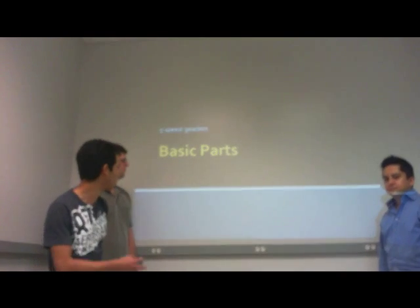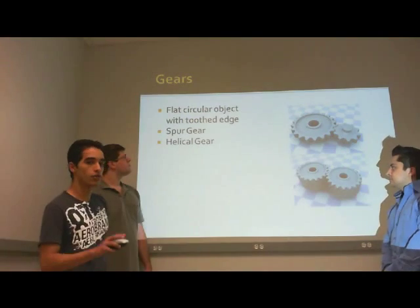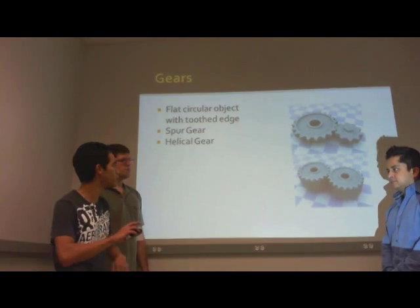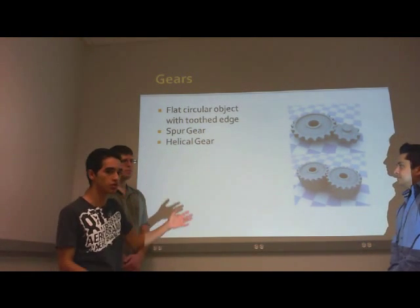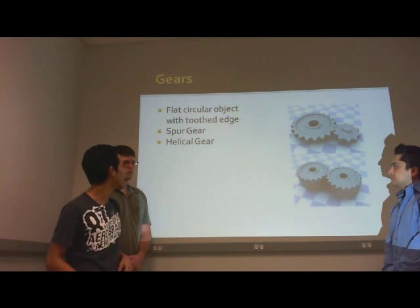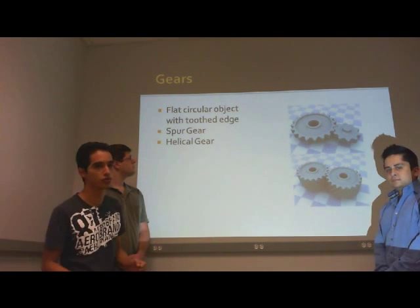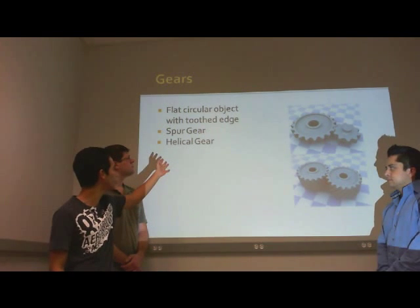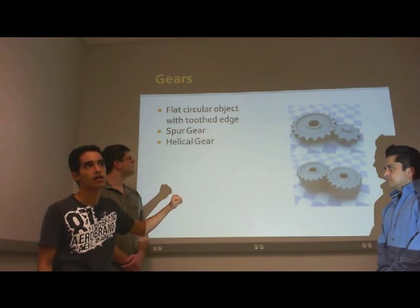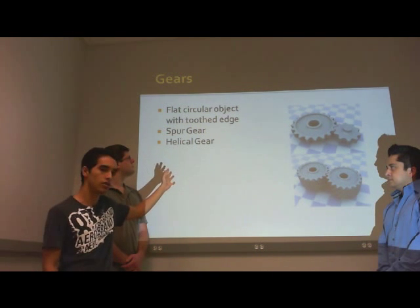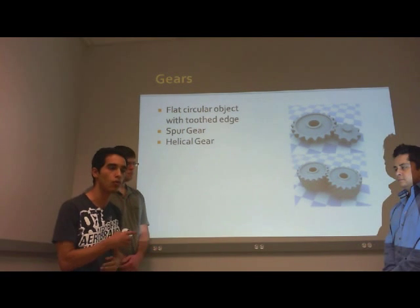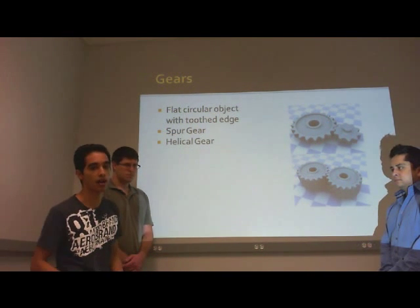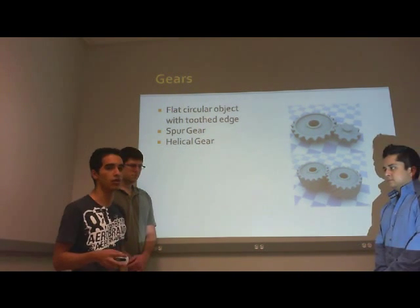Now we start with the basic parts. The first thing that you'll see in the gearbox the most is a gear, which is a flat object with two edges. The most common gears used for a gearbox are spur gears and helical gears. The one they use the most is the helical gears.